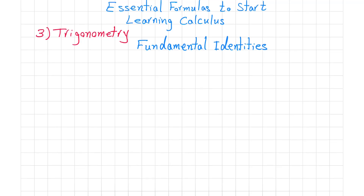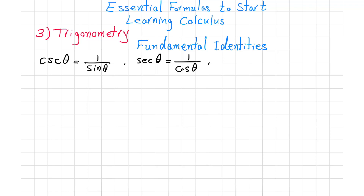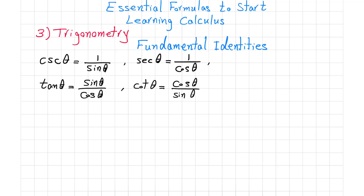The first one is cosecant of theta, which is the inverse of sine of theta. Then secant of theta, which is the inverse of cosine of theta. Also we have tangent of theta, which is defined as sine of theta over cosine of theta. Then we have cotangent of theta, which is defined as cosine of theta over sine of theta.